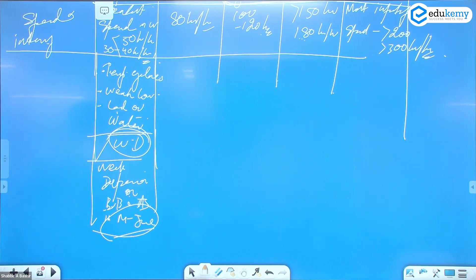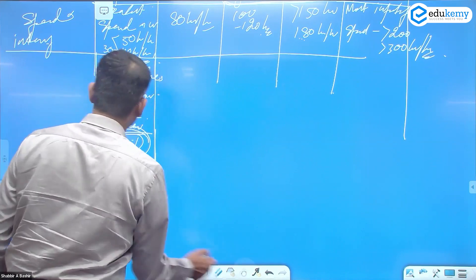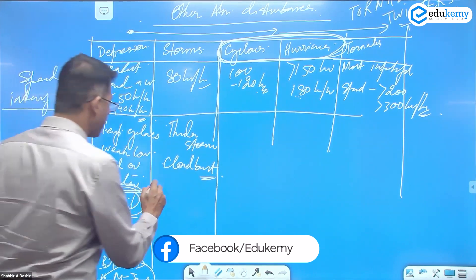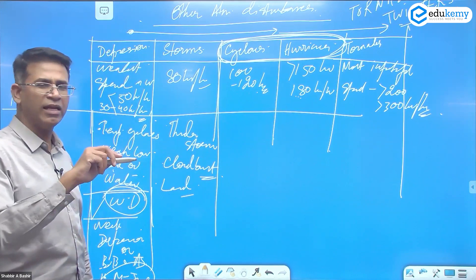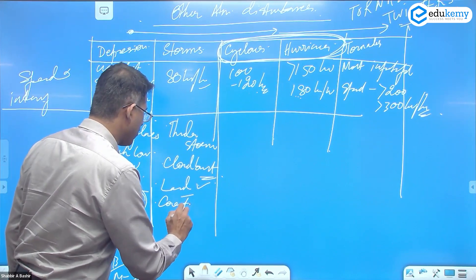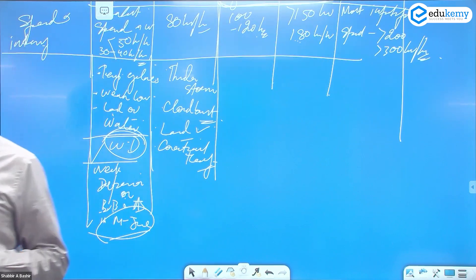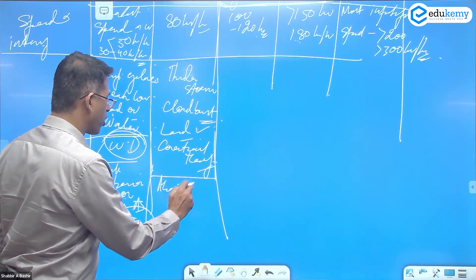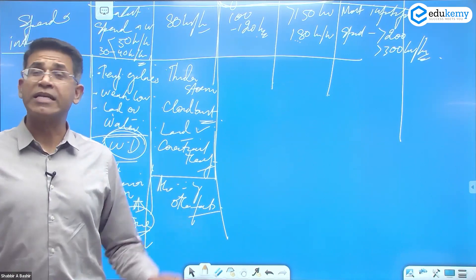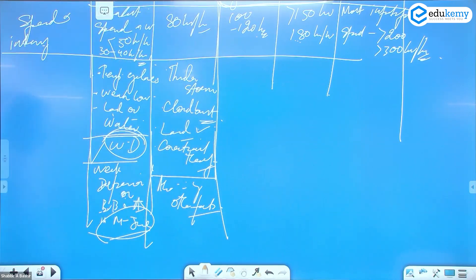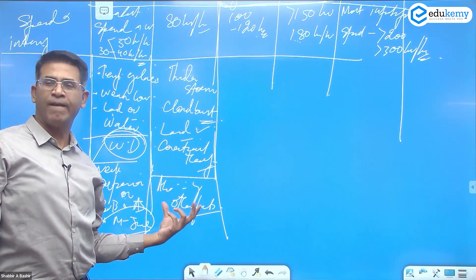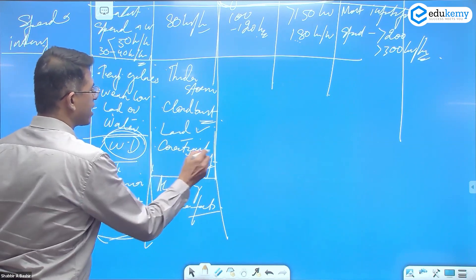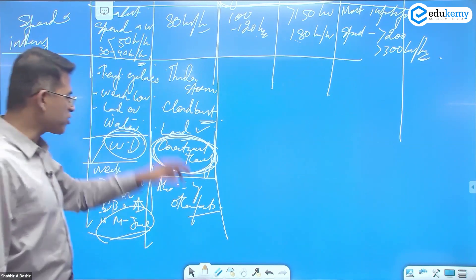These are weak depressions in the Bay of Bengal and Arabian Sea in May and June. Now, storms include thunderstorms and cloudbursts. Thunderstorms and cloudbursts happen mainly on land, and a common reason is convectional heating. However, storms can also occur due to other factors like rapid orographic upliftment or strong frontal contrast between cold and warm fronts, though convectional heating is the more common cause.